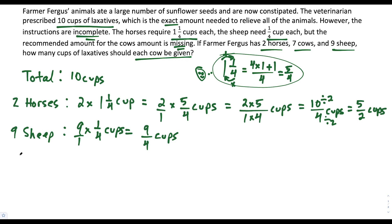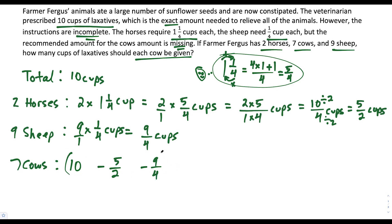Now for the cows. We know there are 7 cows, but we don't know how much they need each. What we do know is the total of 10 cups, and how much the horses and sheep need. So now we can subtract. We do 10 minus the 5/2 cups for the horses, minus the 9/4 cups for the sheep — because the remaining amount goes to the 7 cows. This is in cups of laxatives.